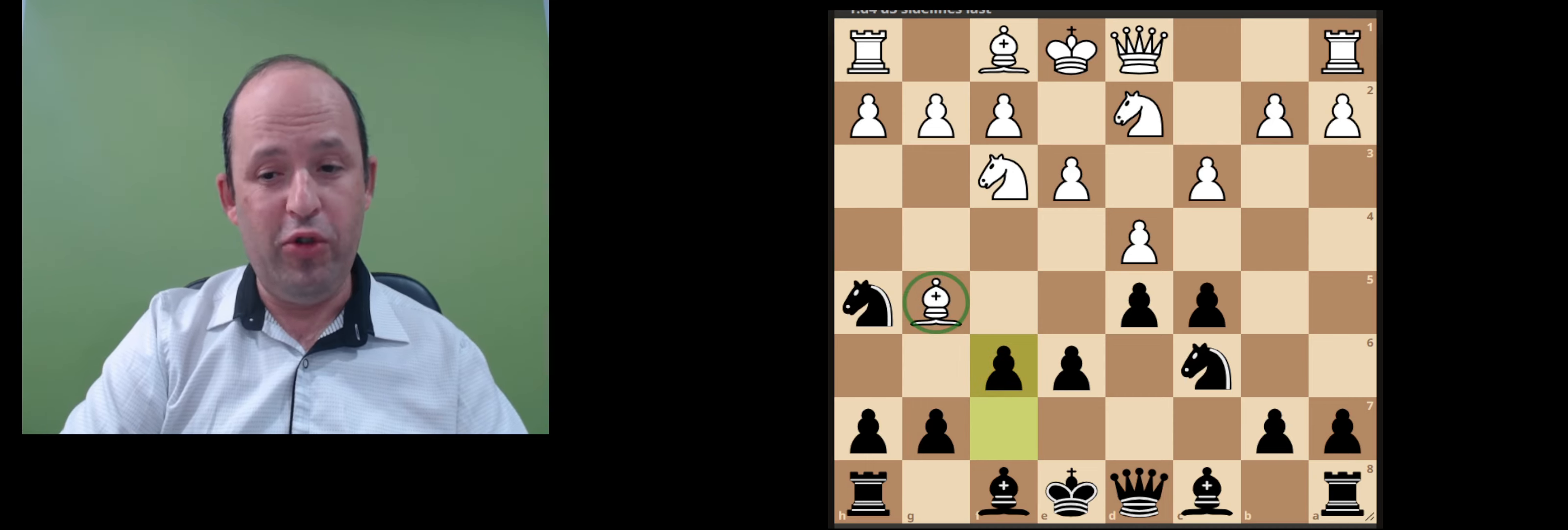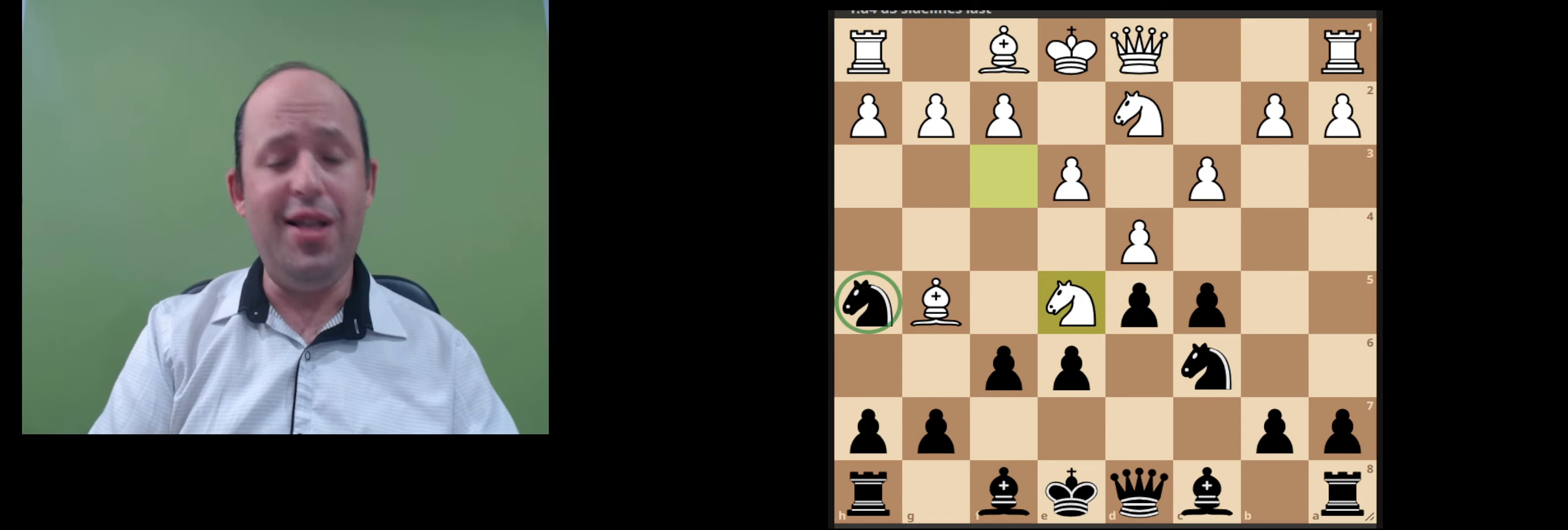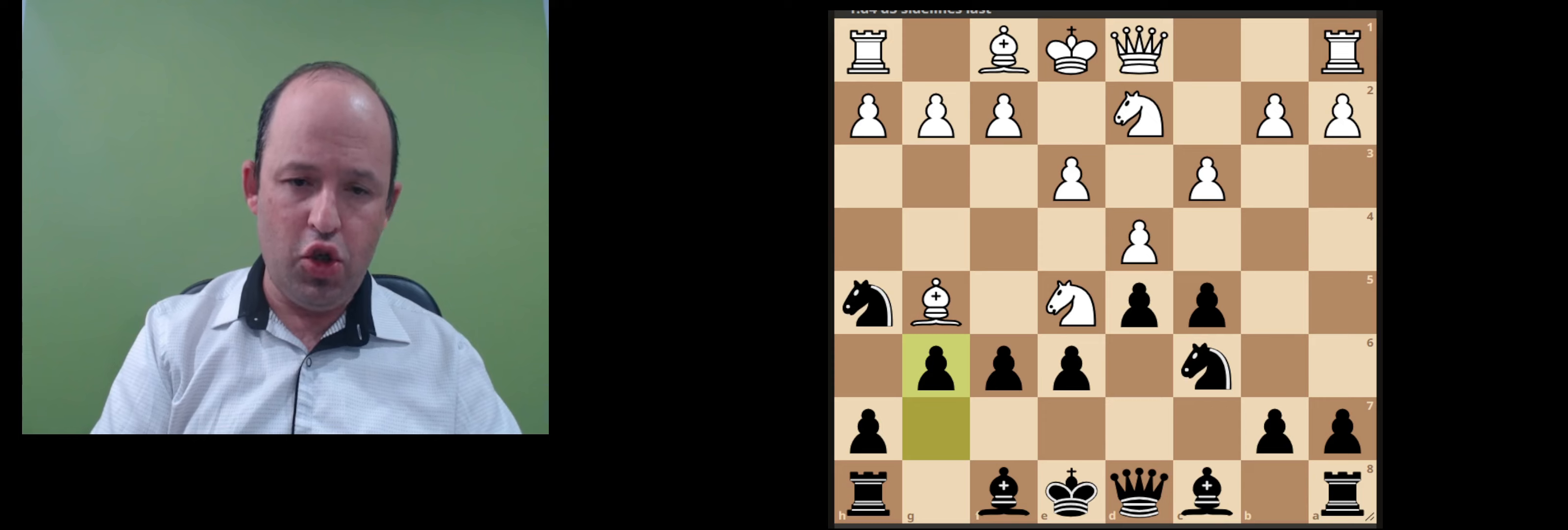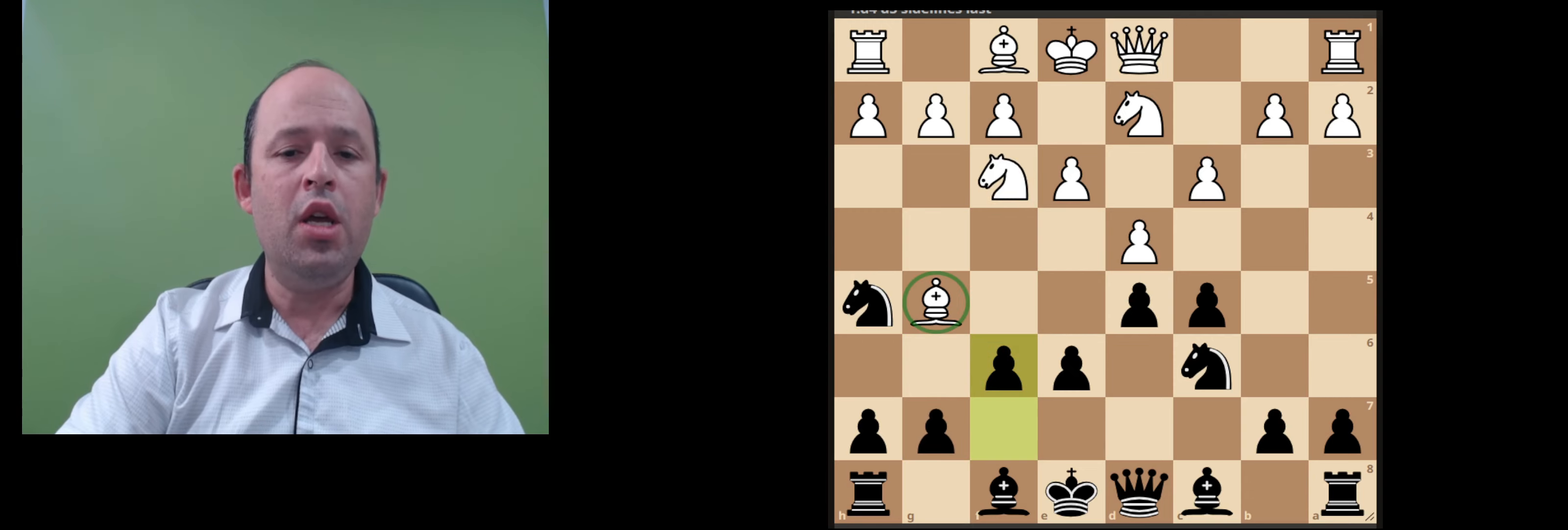Obviously you probably have a question what happens with our knight on h5. For example here there is already tactical opportunity for White to strike with Knight e5, but not a big deal - we just play g6. We always play g6 in this line and it's perfectly fine. Actually the knight can be relocated later on to g7, transfer to f5, so it's not a problem at all.